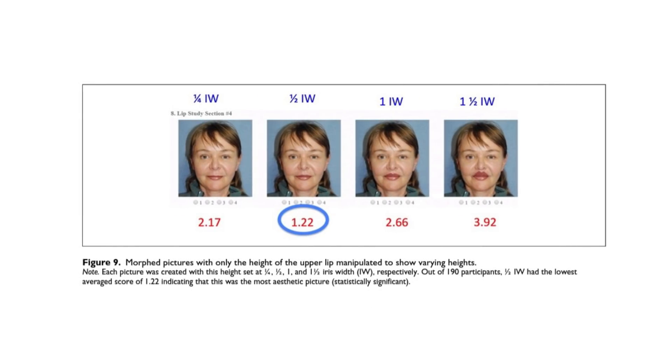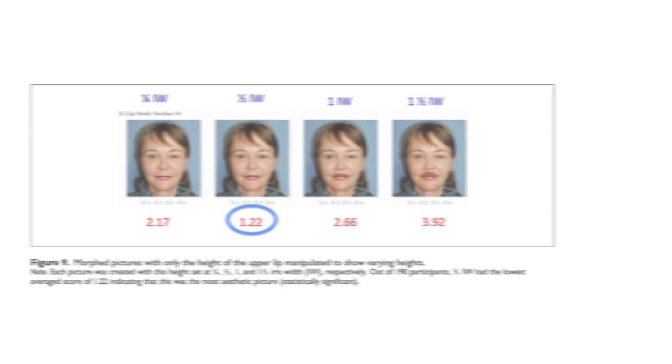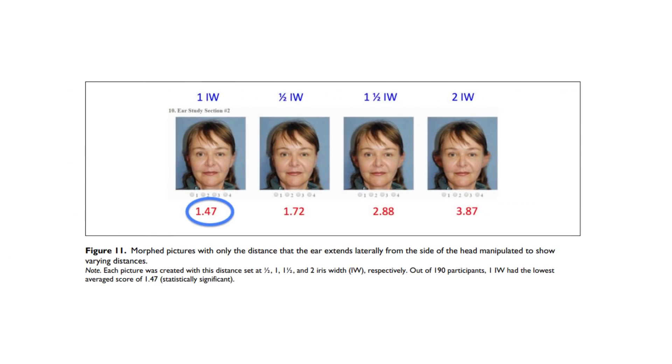Similarly, the ideal height of the upper lip was found to be half of the iris width, whereas the ideal distance of the ear from the side of the face was found to be somewhere between 0.5 and 1 iris width.